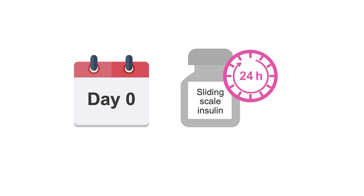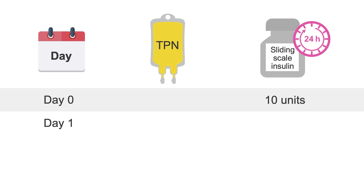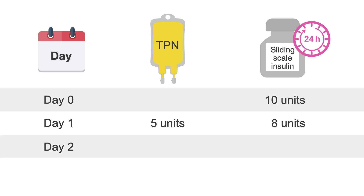Let's go through an example. Say that over the previous 24 hours prior to starting TPN — which we'll call day zero — your patient has required ten units of sliding scale insulin. For their day one TPN bag, you could add half of this sliding scale amount, so five units. On day one, they also require eight units of sliding scale insulin in addition to their TPN. So for their day two TPN, you could add an extra half of this amount — four units — in addition to the five units from yesterday, meaning the TPN will have nine units total.